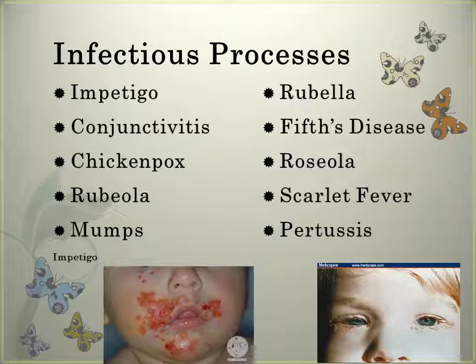Chicken pox is obtained through direct contact, droplet, airborne spread, and contaminated objects. The incubation period is 2-3 weeks, and the child is infectious one day prior to the eruption to 6 days after the first crop of sores appears. They start as a macule that progresses to a papule, to a vesicle, and then crust over. They are more prevalent on the trunk. There may be a low fever, malaise, anorexia, pruritis, and irritability. We treat it symptomatically, keeping the child clean. Acyclovir may help decrease the number of lesions, and these children need to avoid pregnant women.